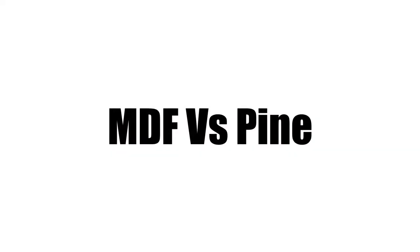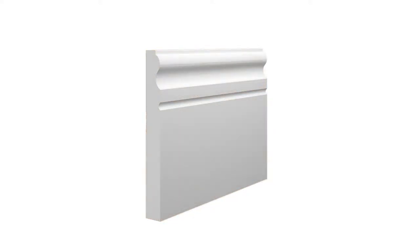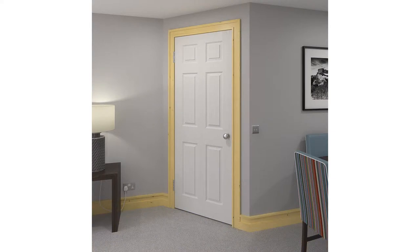As many of you know, you can get skirting boards in a variety of materials, and this can alter the look and feel of the finished product. There are many wood types such as softwood pine, and hardwoods such as oak. However, MDF is the most popular choice for making skirting boards today. The same can also be said for the architraves. In today's video, I'll be explaining the differences between MDF and pine skirting and architraves, to see why you may want one over the other.